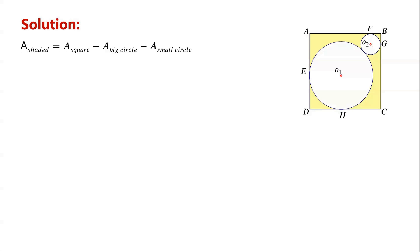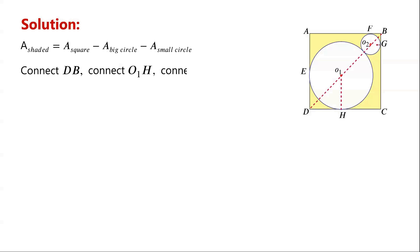As the side length of the square is 1, the area of the square is 1. To find the areas of the circles, we need to find their radii. We connect DB, noting that O1 and O2 must be on segment DB. Then we connect O1H and O2G. Now we have two right-angled isosceles triangles: O1HD and O2BG.